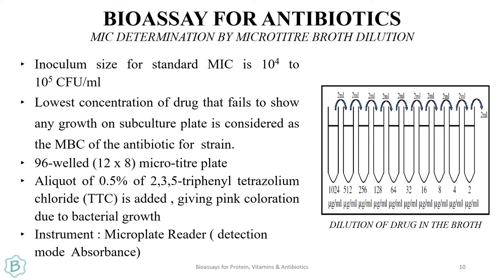Microtiter broth dilution, or the broth dilution assay, is used for measuring the bactericidal or bacteriostatic concentration of antibiotics. A gradually increasing concentration of antibiotic solution is prepared, and all solutions are inoculated with 10⁴ or 10⁵ colony forming units per mL. All wells are also added with 0.5% of 2,3,5-triphenyl tetrazolium chloride, a chemical that gives a pink coloration depending on bacterial growth — the more the bacterial growth, the darker the pink coloration. A microplate reader gives absorbance corresponding to the intensity of pink coloration, which corresponds to bacterial growth.